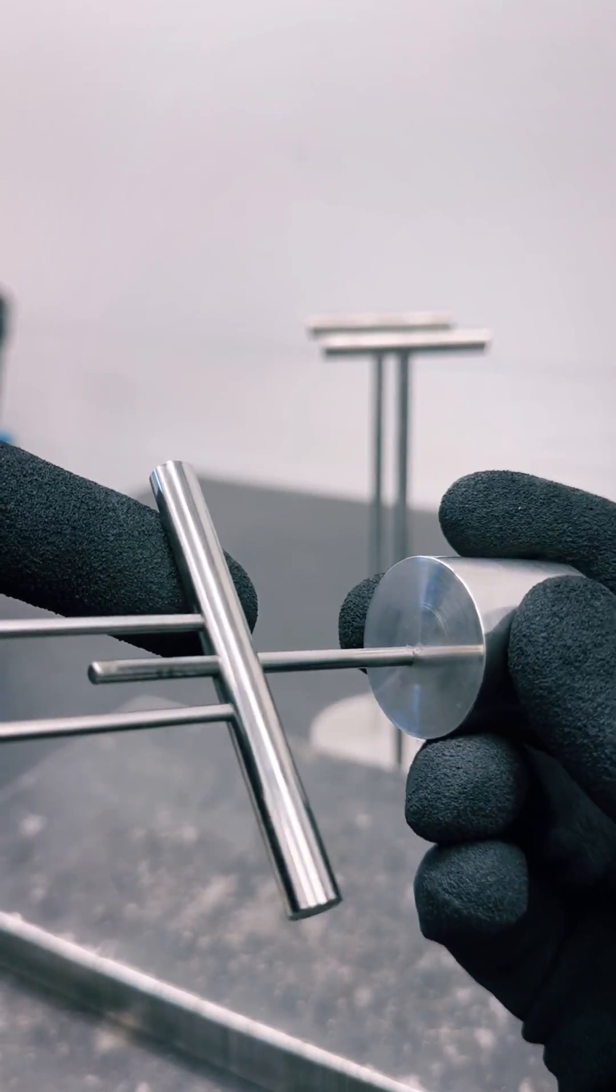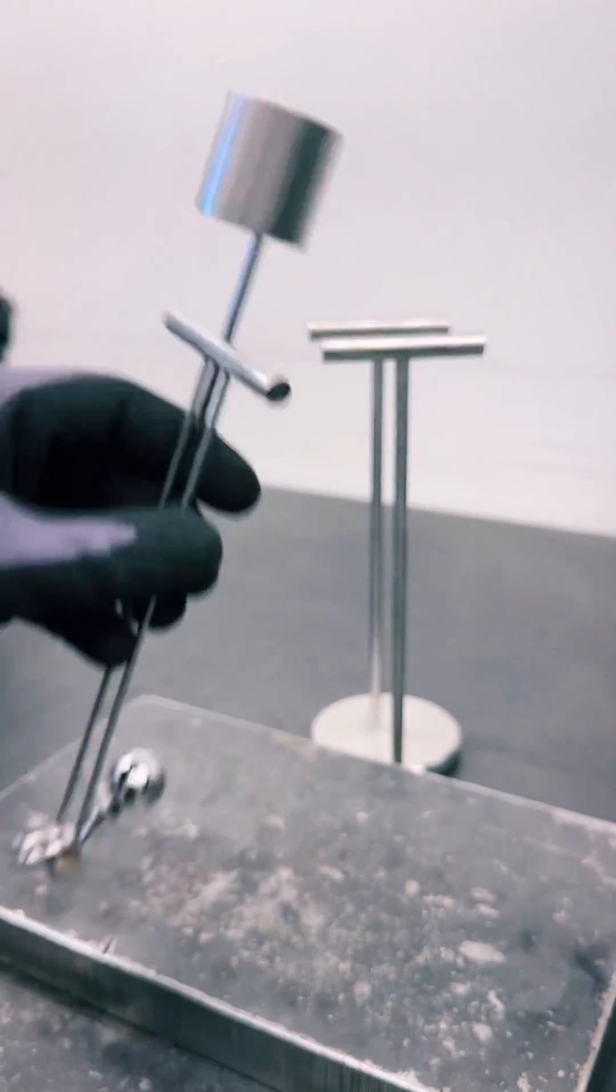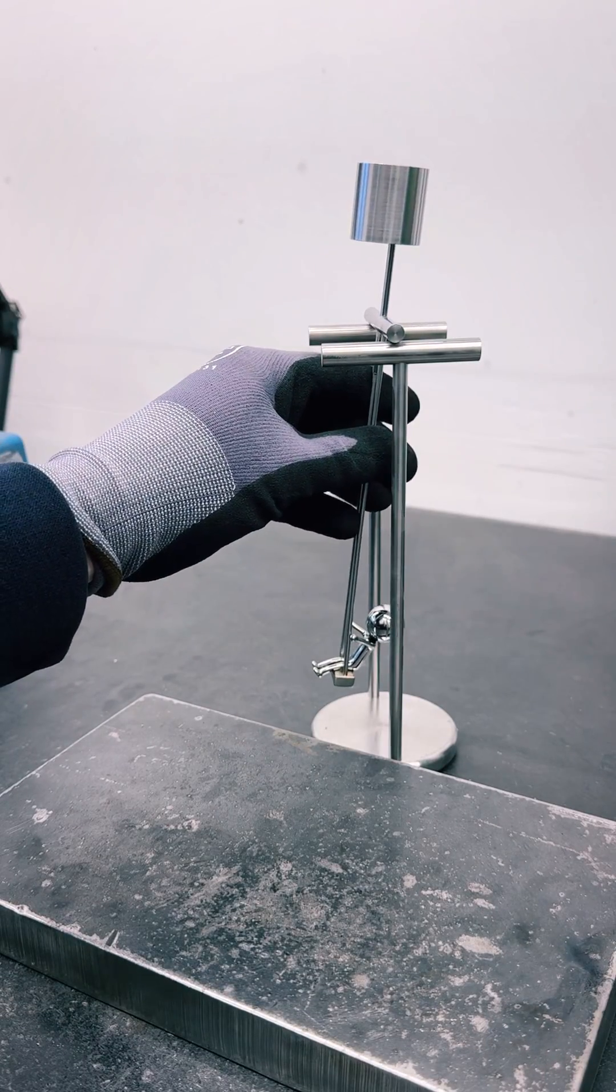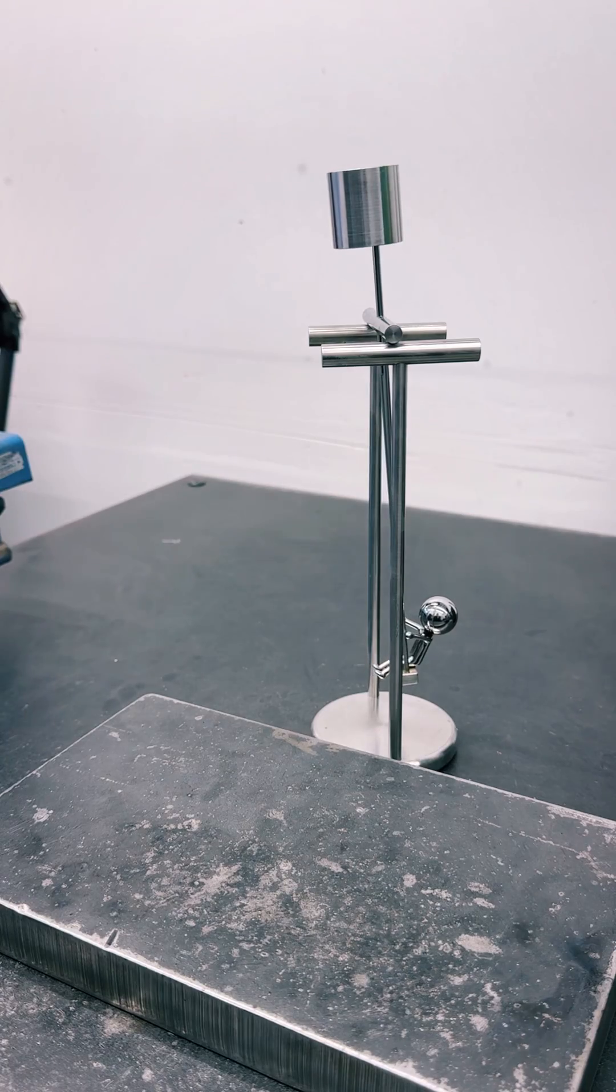I can twist this counterweight until it perfectly counters his head and then he will sit straight up and down. See now his neutral point is almost perfectly straight up and down.